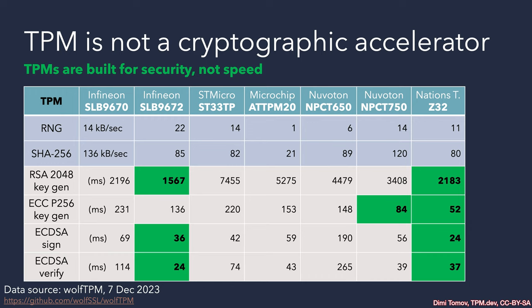We can see the improvements over generations. This is also true for the last entry in the table, the Nations Technology Z32 TPM, which is a Chinese manufacturer not widely available outside China. It was released around 2019, and it also benefited from technology advancements, offering good performance. The latest Infineon SLB 9672 and the Nations Tech Z32 outperformed the rest, likely because they were released most recently.